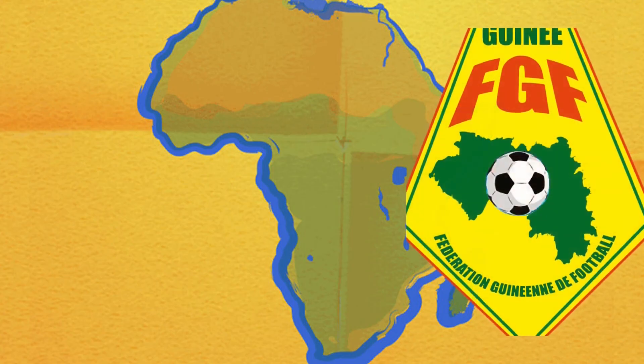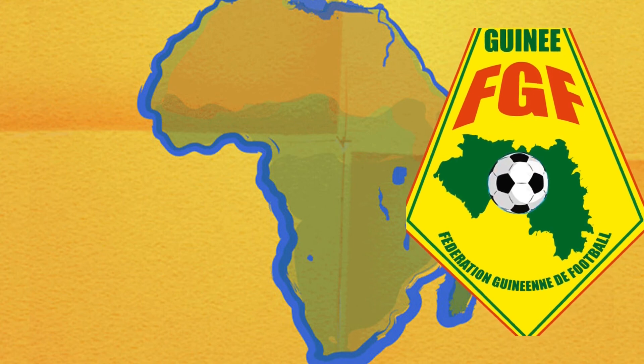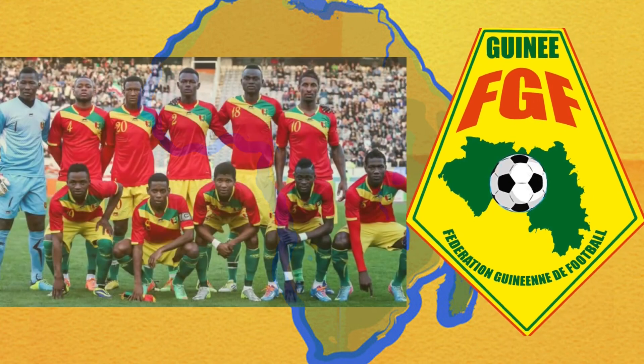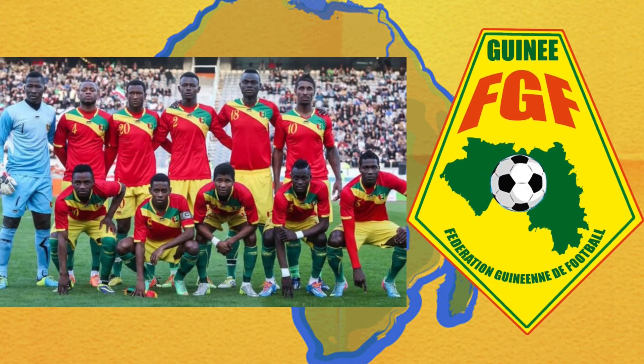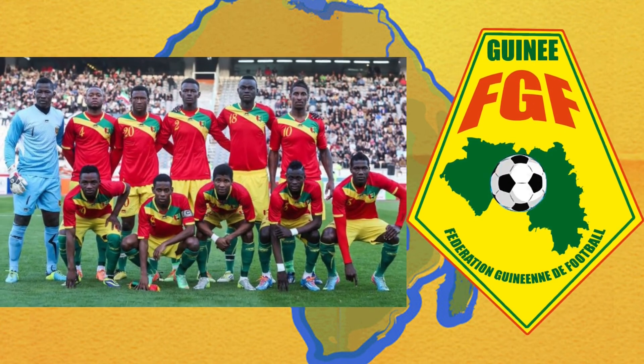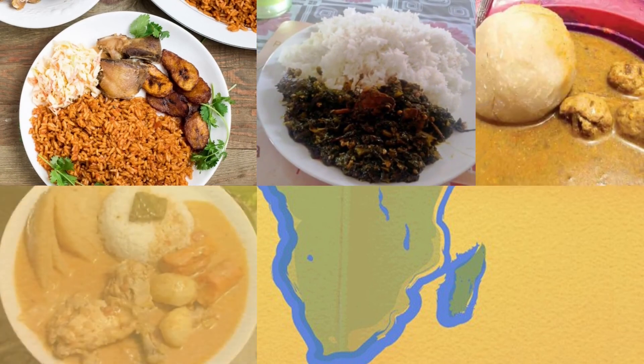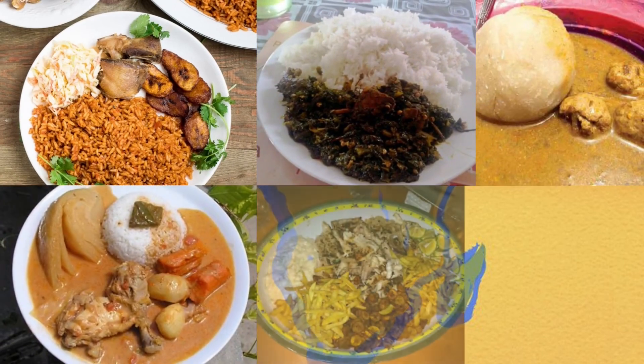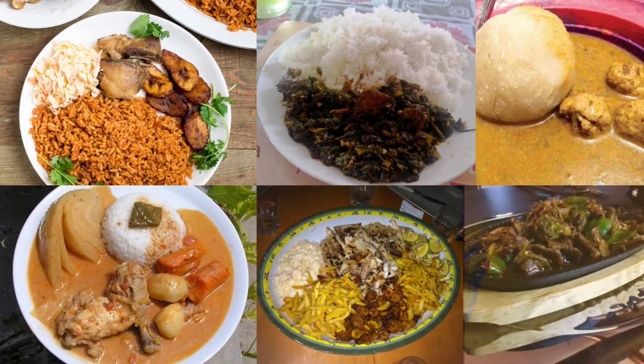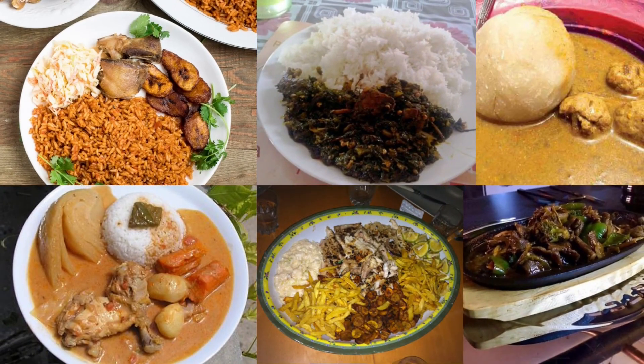Football is the most popular sport in the country of Guinea, alongside basketball. Guinean cuisine varies by region, with rice as the most common staple food. Cassava is also widely consumed.